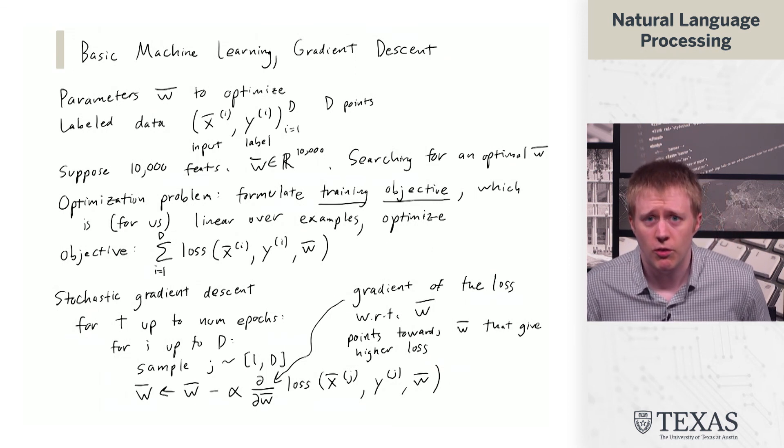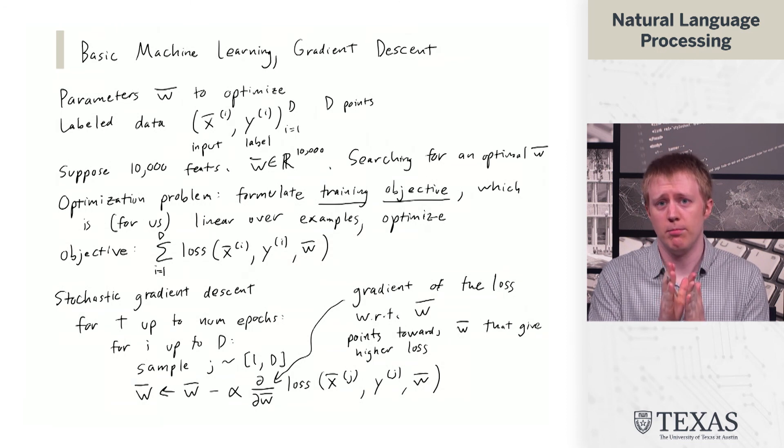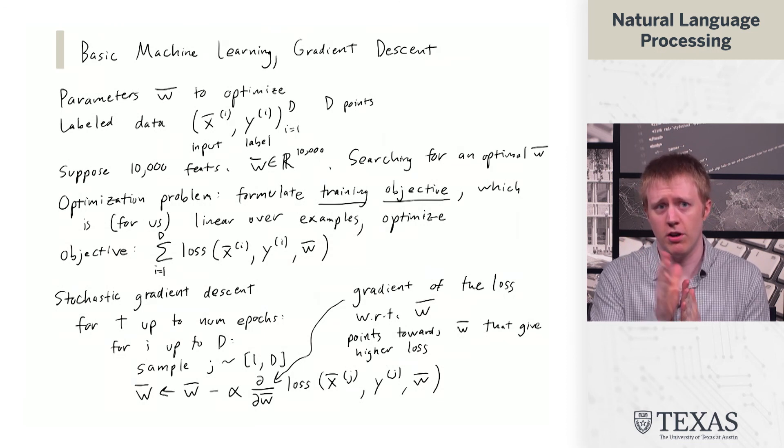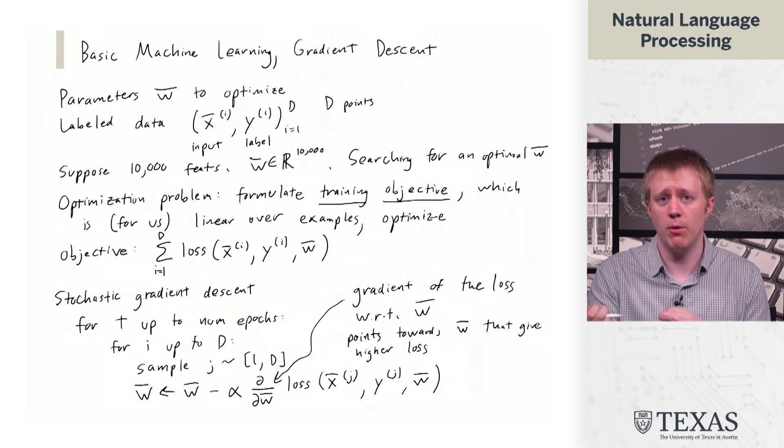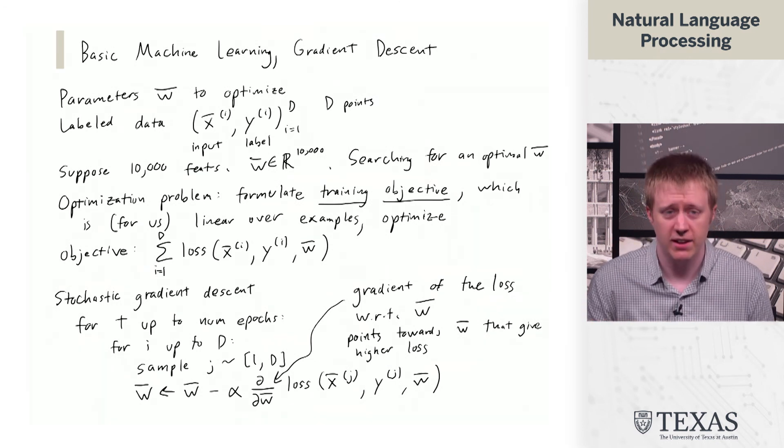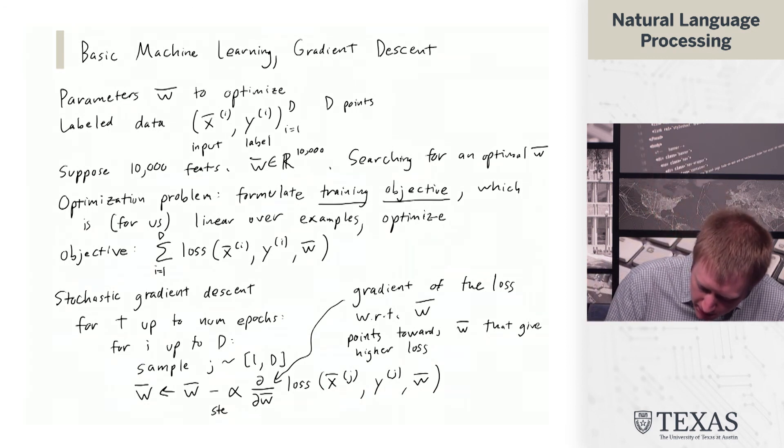And so because this gradient tells us, if we move the current value of W in this direction, we're going to get a higher amount of loss. What we want to do is we want to subtract that, we want to move in the other direction and reduce the loss, multiplied by some step size alpha.